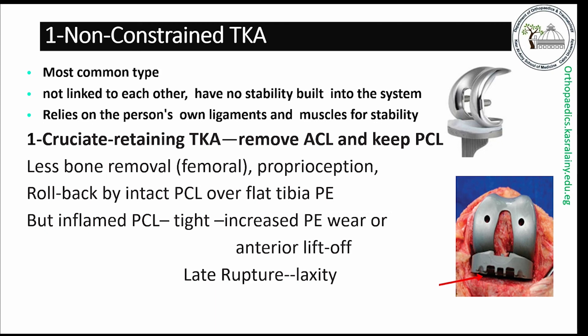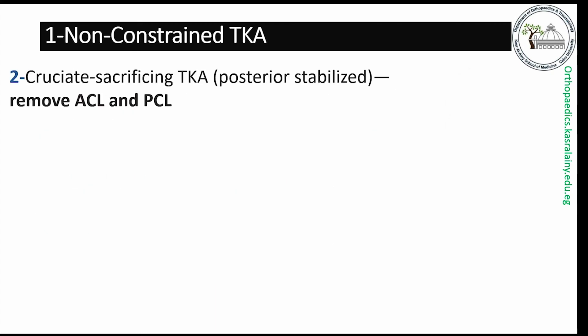Also, late rupture of the PCL could occur with joint instability. To overcome these problems, a second type of non-constrained TKA implant can be used: the cruciate sacrificing implant, as in the posterior stabilized design.